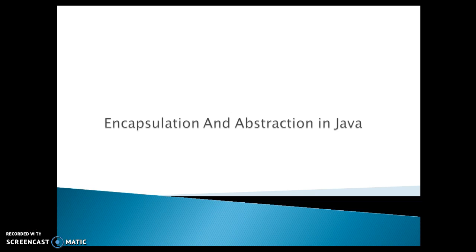A Java class is the foundation of encapsulation in Java. When we talk about abstraction, abstraction means hiding the complexity and only showing the essential features of the object. In a way, abstraction means hiding the real working — we as a user or developer only know how to use it.